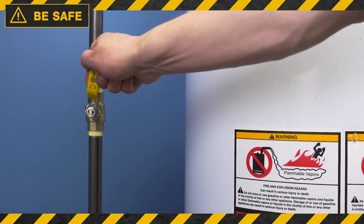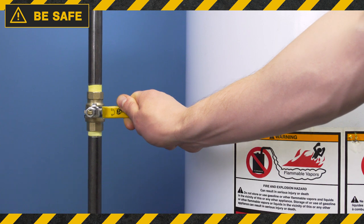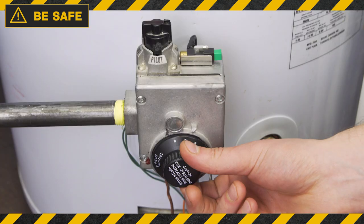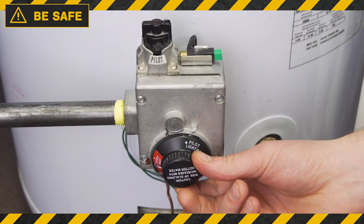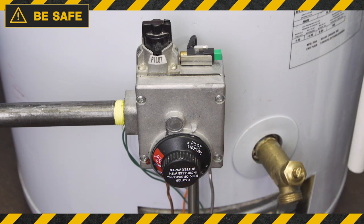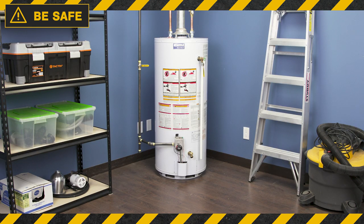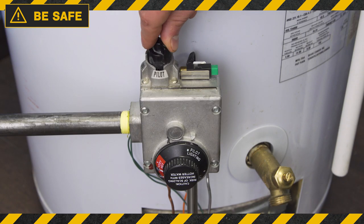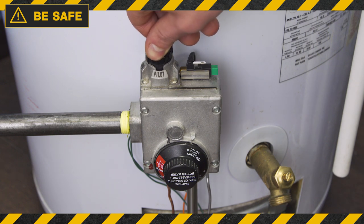First turn off the gas supply. The handle should be perpendicular to the pipe. Now if the burner or pilot was just on, then give some time for everything to cool down. Now set the control valve to the off position.